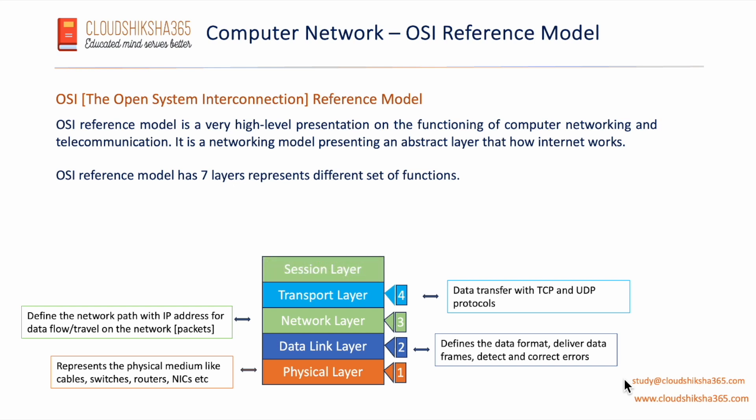Layer 5 is the session layer. Its main function is session management — establishing, maintaining, and terminating sessions. It also handles synchronization of connections and resynchronizes if there are any errors. Additionally, it acts as a dialogue controller, allowing two systems to start communication in half-duplex or full-duplex mode.